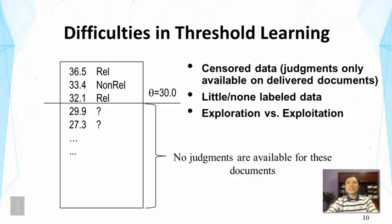There are some interesting challenges in threshold learning in the filtering problem. Here I show the historical data that you can collect in a filtering system. You can see the scores and the status of relevance. The first one has a score of 36.5 and it's relevant. The second one is non-relevant, etc.